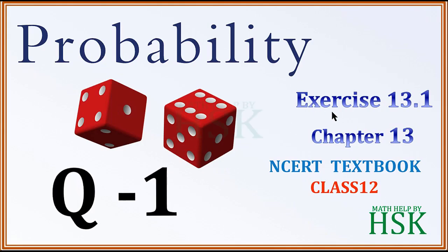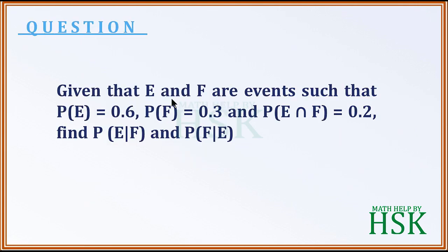Taking question number 1 of exercise 13.1 from the chapter probability. The question is: given that E and F are events such that probability of E is equal to 0.6, probability of F is equal to 0.3, and probability of E intersection F is equal to 0.2. Find probability of E given F — that is the conditional probability of E given that F has already occurred — and probability of F given E, the conditional probability of F given that E has already occurred.